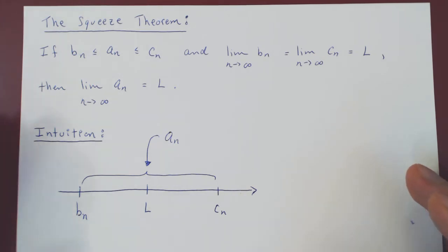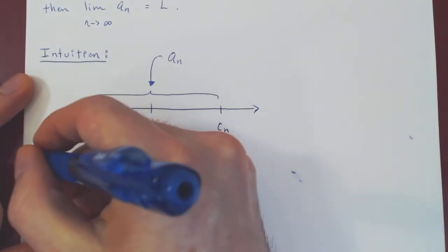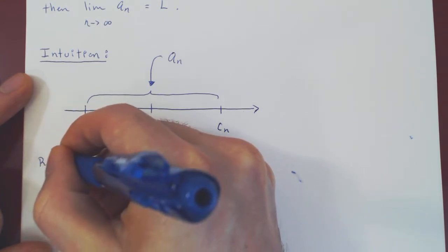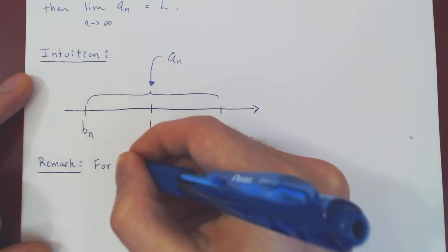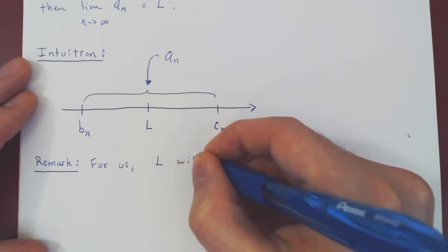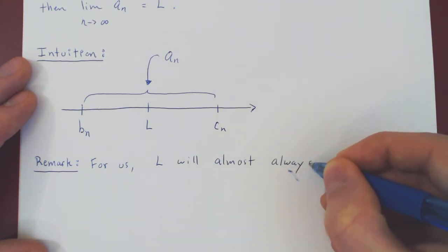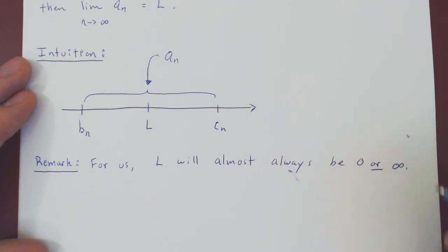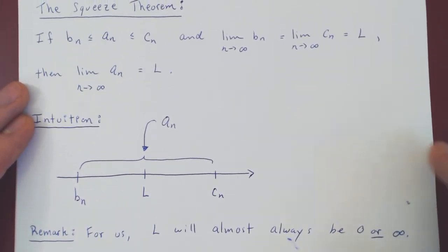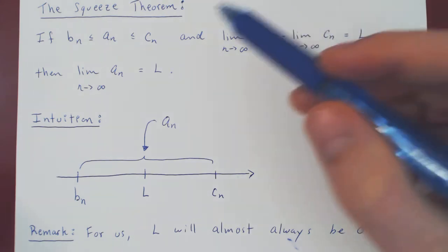That's the intuition. Now for us, almost always l will end up being either 0 or positive infinity. When I say 'for us,' I mean in the examples I'll have you consider, l will almost always, if not always, be 0 or positive infinity. I'll give two examples of the squeeze theorem — one where l is 0, one where l is infinity. From our knowledge of a hierarchy of functions, just by looking at the limit, we'll know right away whether we have 0 or infinity, and then we'll prove it rigorously using the squeeze theorem.